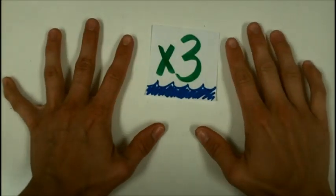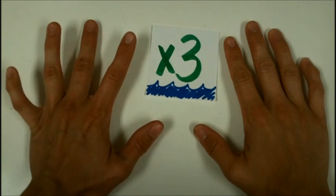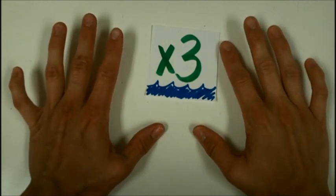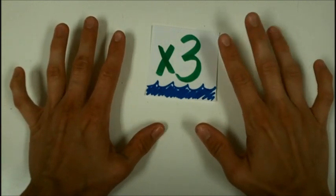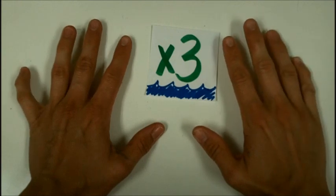Count by threes. Ready? Go. 3, 6, 9, 12, 15, 18, 21, 24, and 27, 30, and you're done.